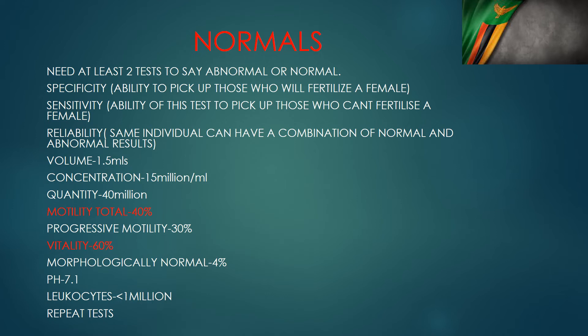One important point: if you find an abnormal test and need to repeat it, it's better to wait 3 months before the repeat. This is because sperm production takes about 90 days. If you repeat within a week or two weeks, you are essentially looking at the same sample. Waiting 3 months means you are examining a completely different sample — one produced entirely within that waiting period.